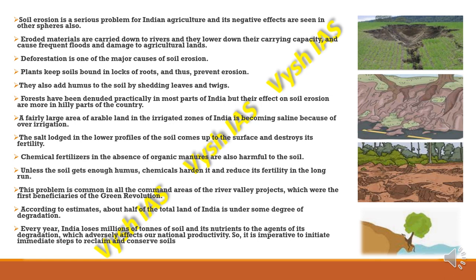A huge portion of the Indian population is dependent on agriculture for livelihood, making soil very important. From the perspective of biodiversity also — forests, animals, and wildlife are heavily dependent on soil. If soil is there, then only forests will exist, and if forests and the ecosystem exist, then only wildlife will exist. Everything is interconnected.